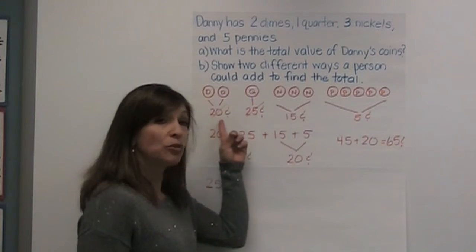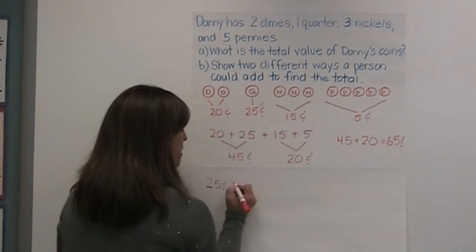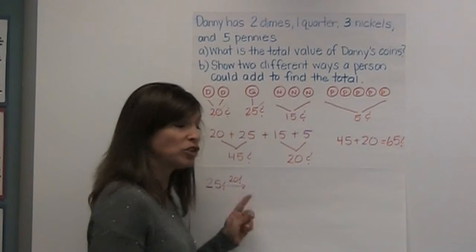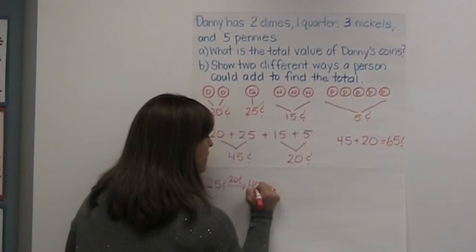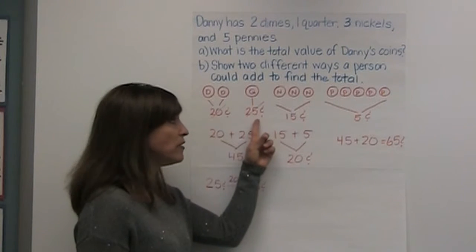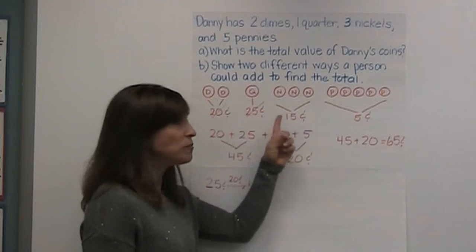I then add to it twenty cents using my arrow method. So I'll draw my arrow and I'll put my twenty over it. And I know that twenty-five plus twenty equals forty-five cents. I'm finished now with my twenty cents and my twenty-five cents. Now I'm going to move on to my fifteen cents.